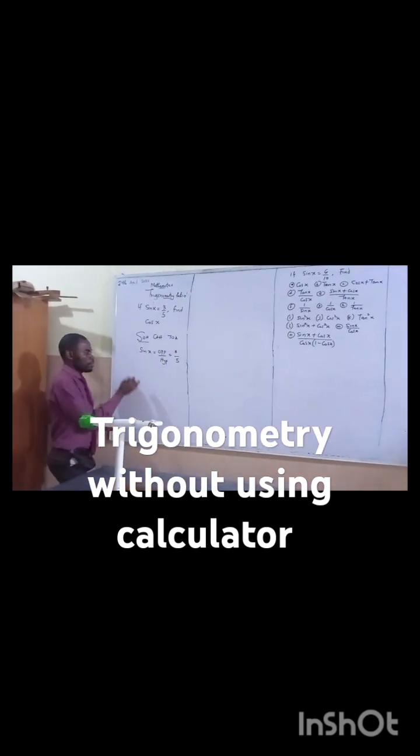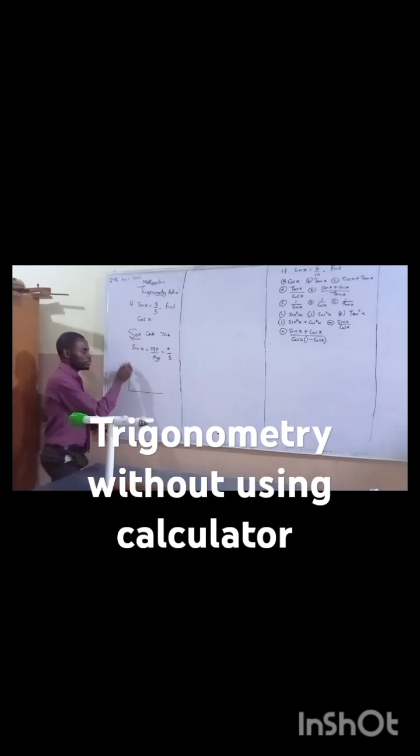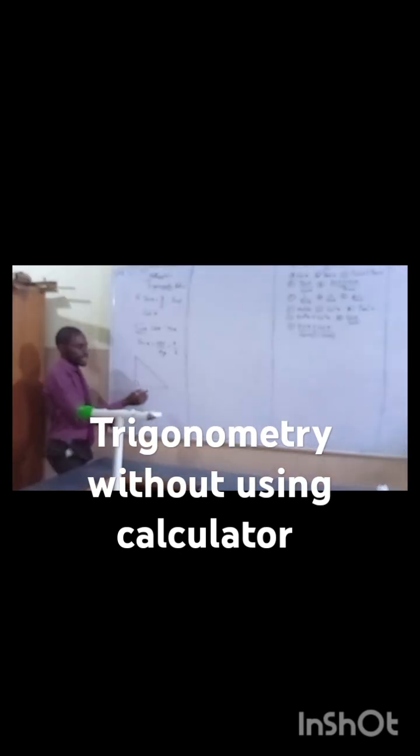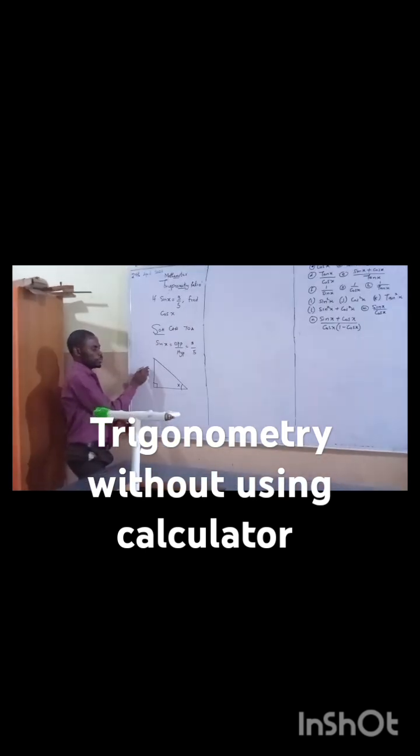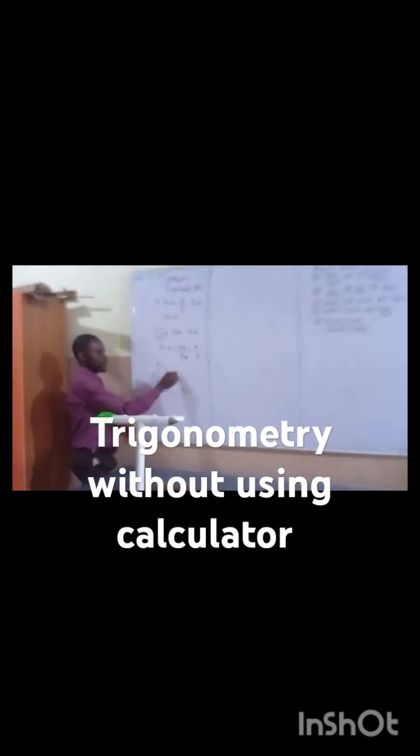Without stressing myself, I will draw a right angle triangle. I create my angle as θ, my opposite is 3, my hypotenuse is 5. To find sine θ, I need to know the adjacent side.